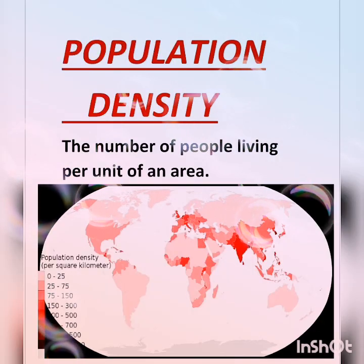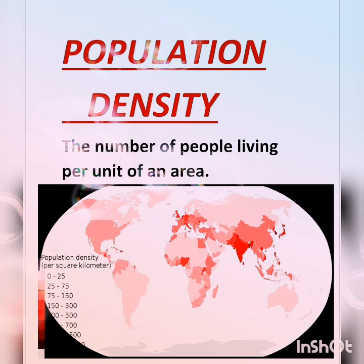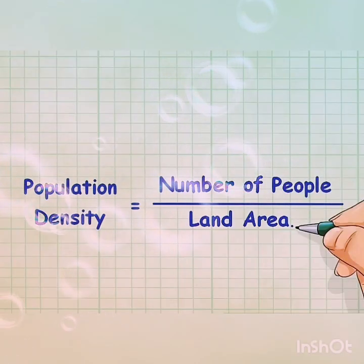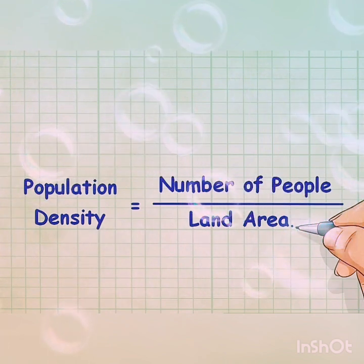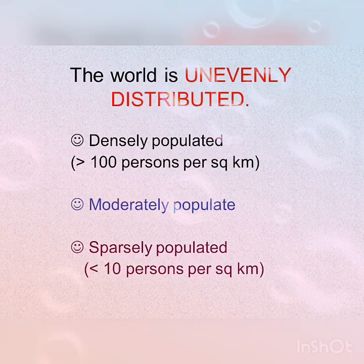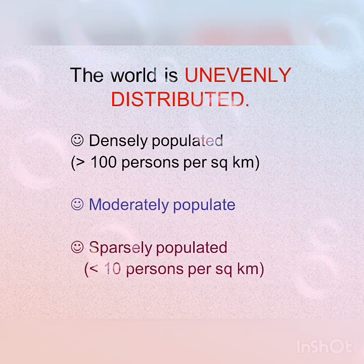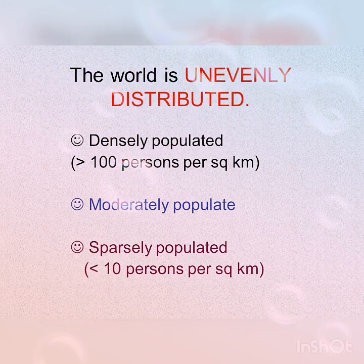Population density refers to the number of people living per unit of an area. It is obtained by taking the number of people in a given area and dividing that number by the total area of the place. According to the density of population, the area can be categorized as densely populated, moderately populated, or sparsely populated.